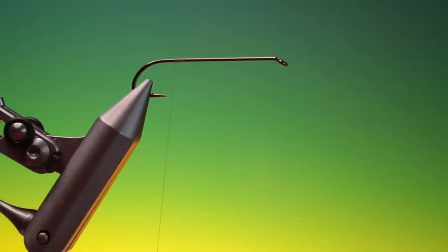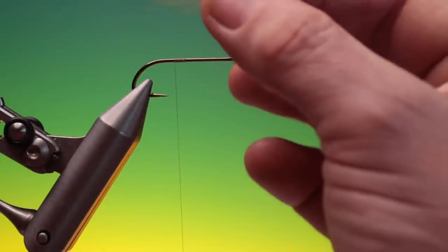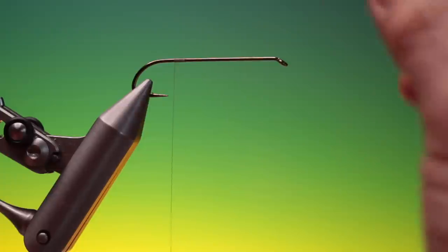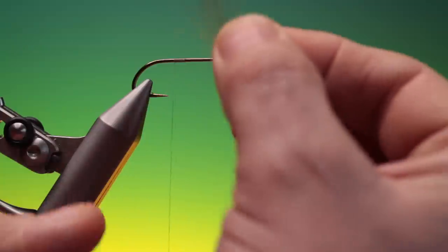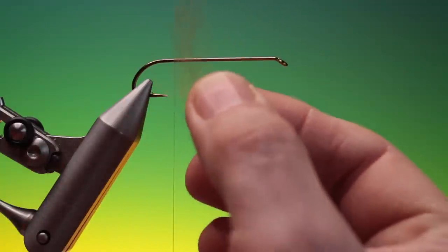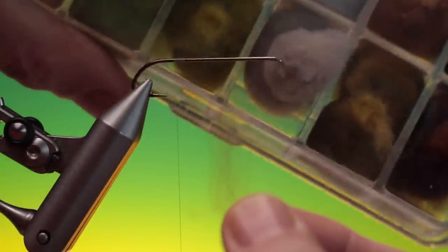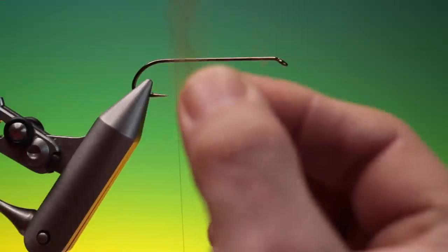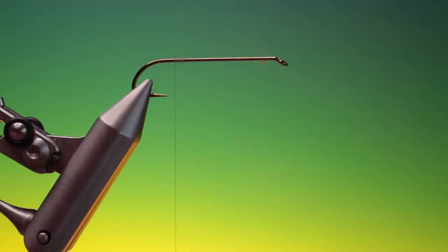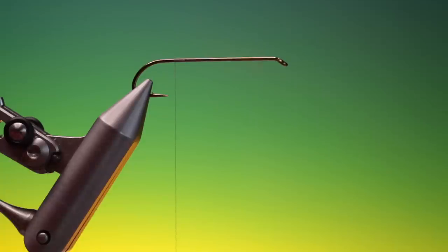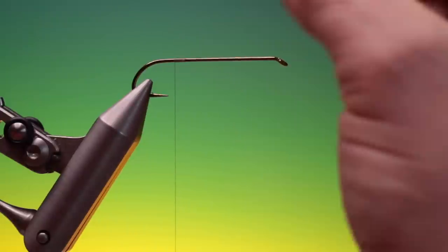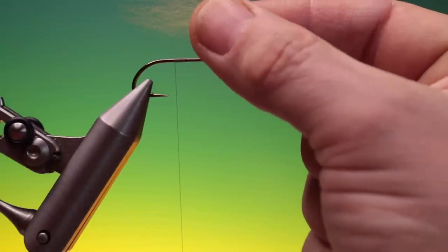So the first technique is just a standard dry fly synthetic body. So you pull out your fibers from your dry fly dubbing box. And you don't want it with a dense area and an open area. You want to try and get it as fine and open as possible.